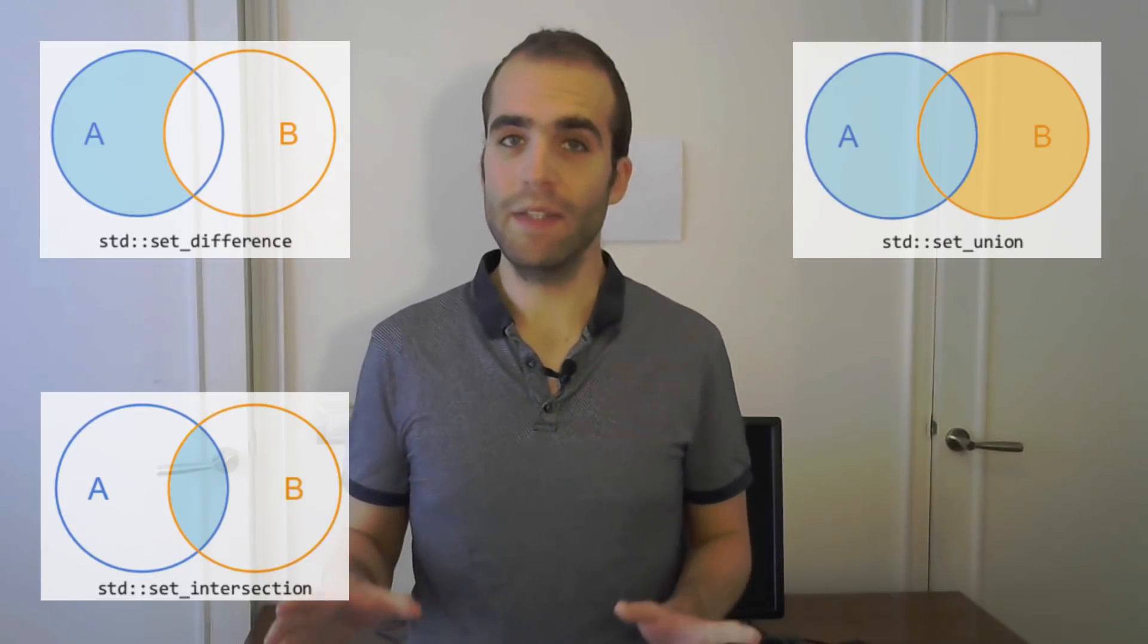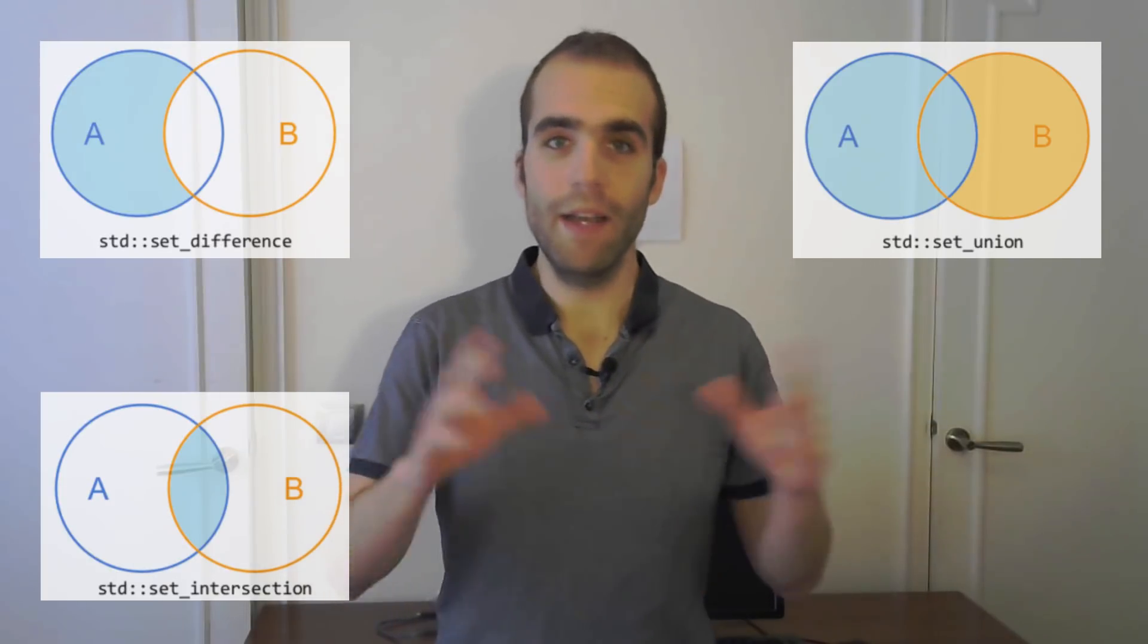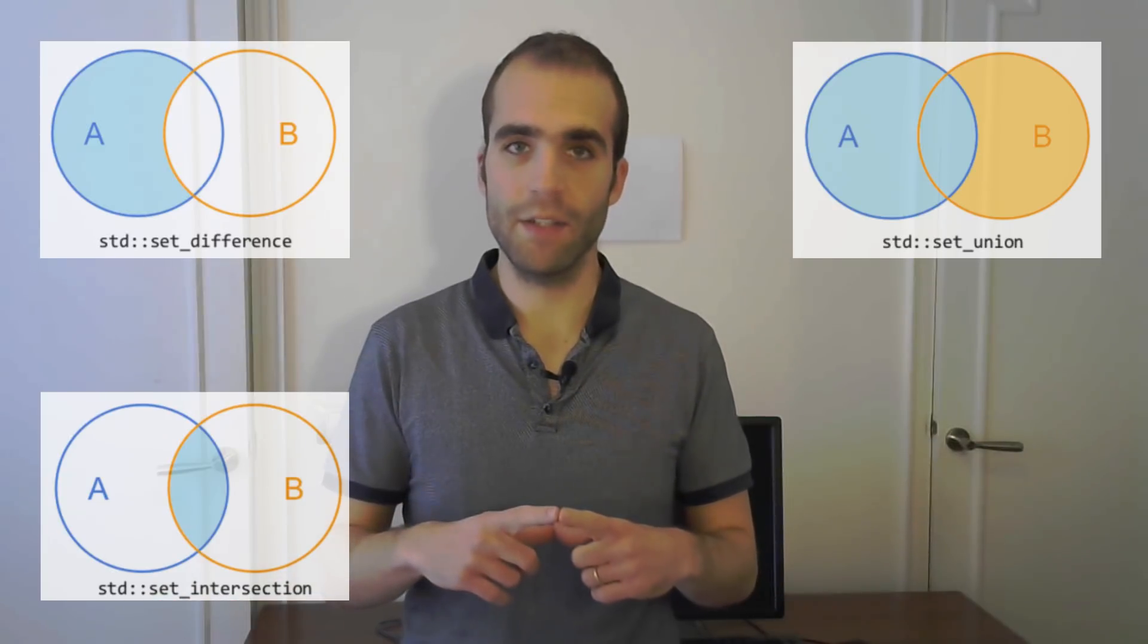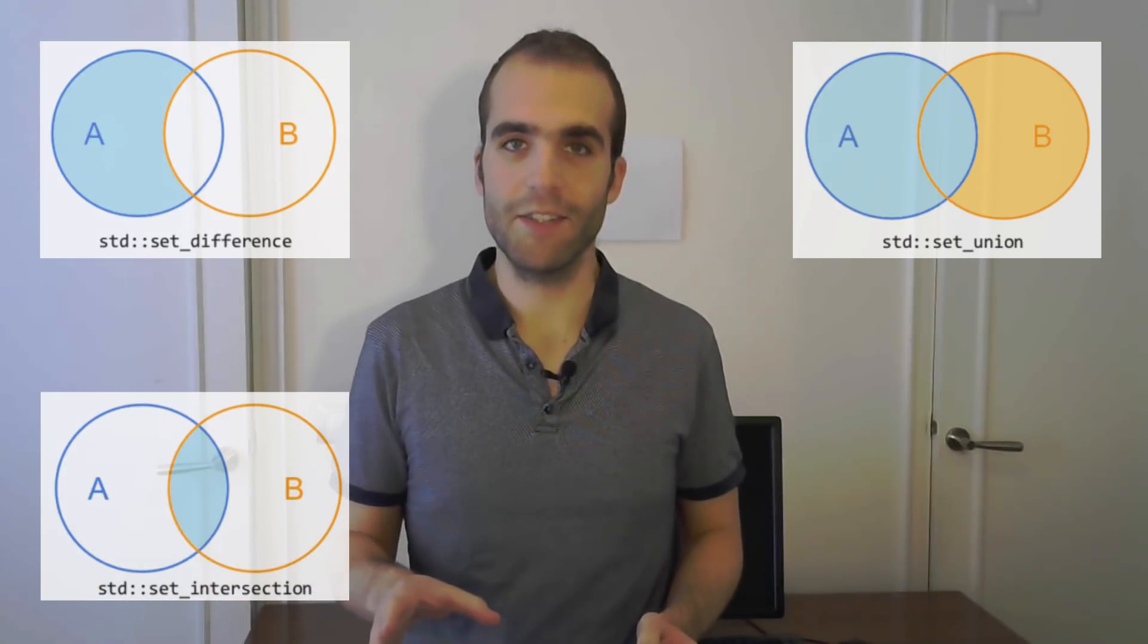Set_union takes two sets, A and B, and gives you the elements that are in A or in B, so all of them, except at the intersection, you don't get it twice, right, so it's like a union on sets. And the elements in the intersection are those coming from A.